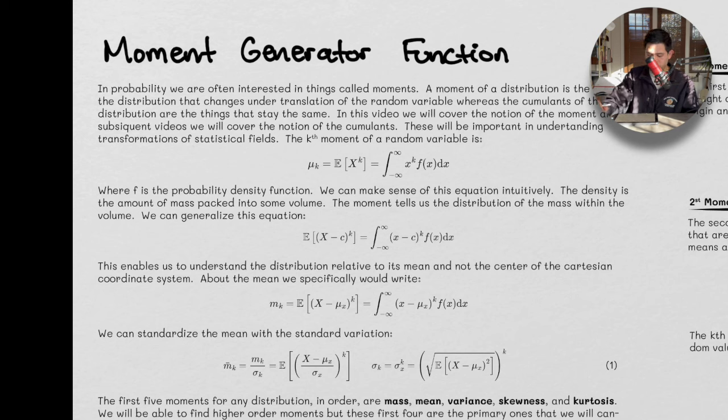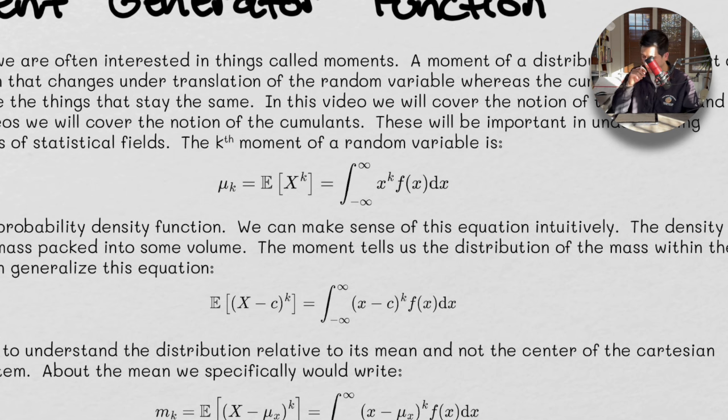These are going to be super, super important in understanding transformations of statistical fields. The kth moment of a random variable is this guy right here. Now let's make sense of this. The kth moment. We sort of made, we've sort of talked about this a little bit before. So, the idea here is, suppose we don't have a k right here. Suppose this is just x times our probability distribution function. And so, if this was just x,